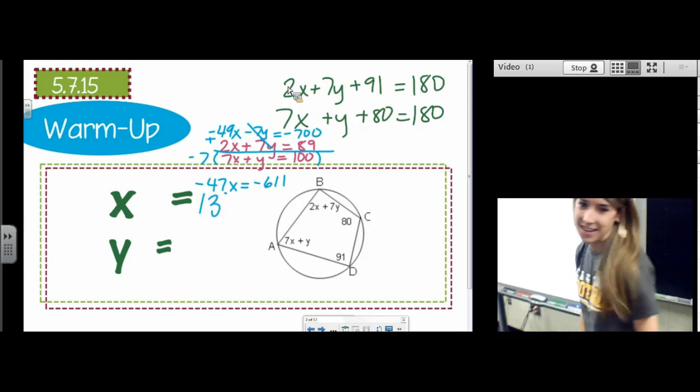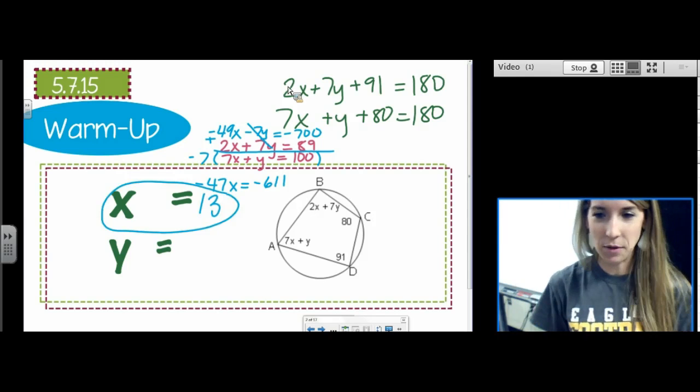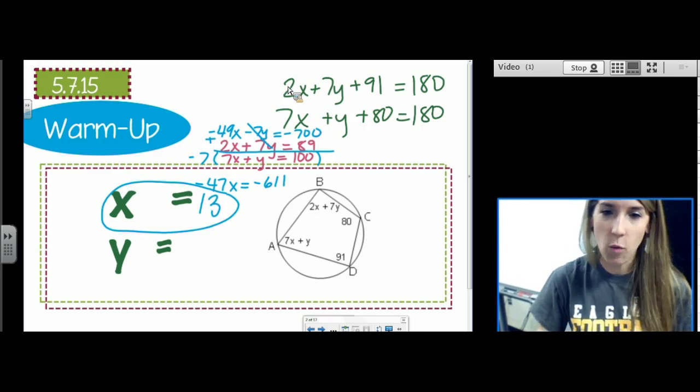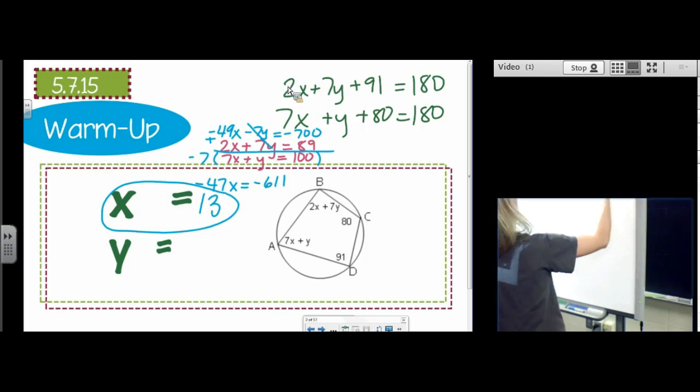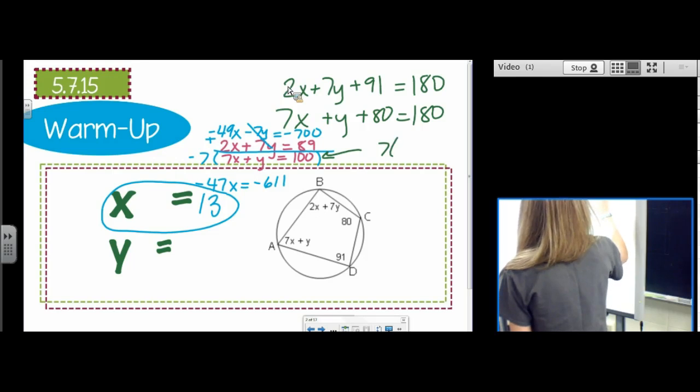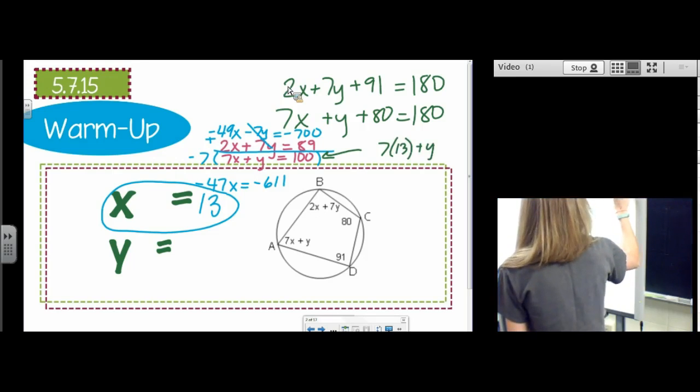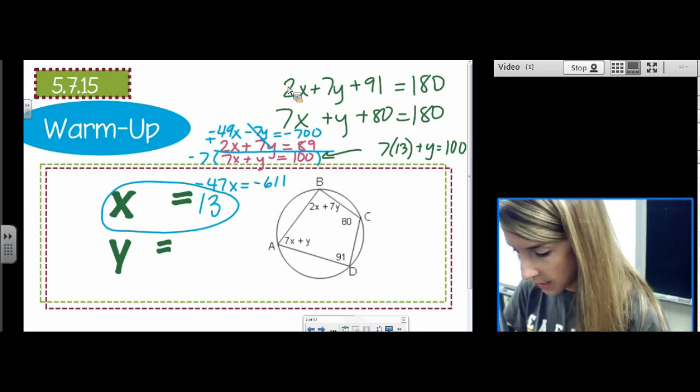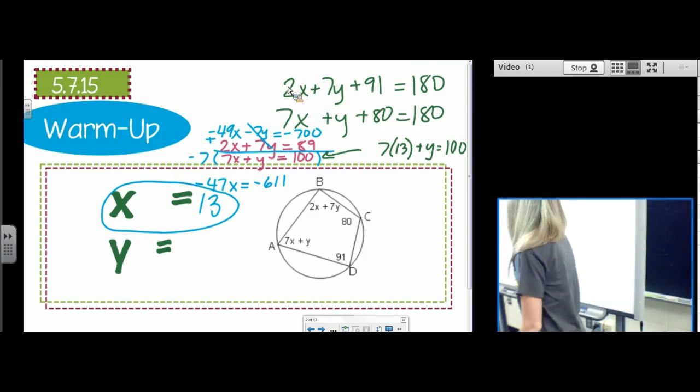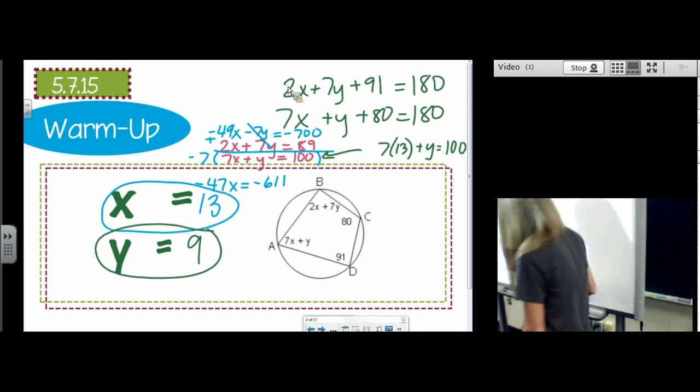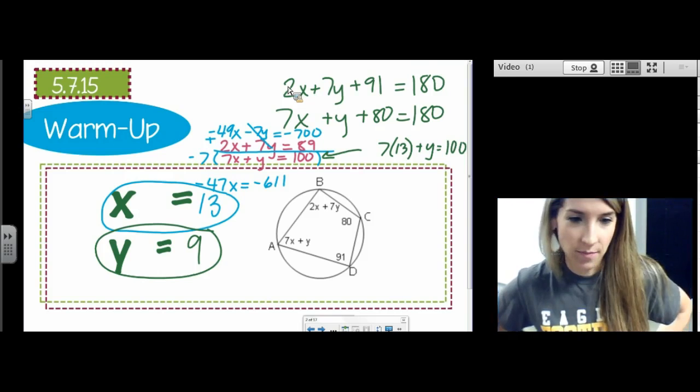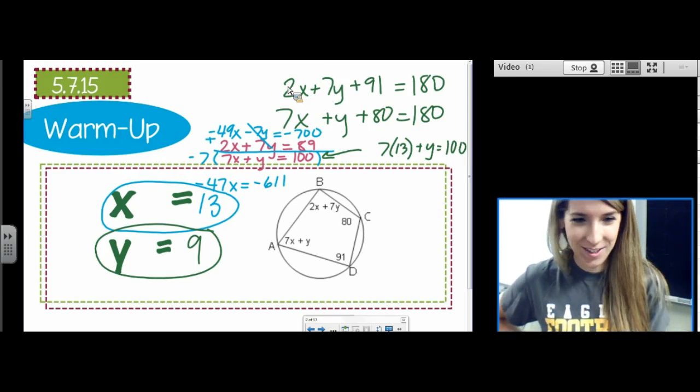So when you divide both sides by 47, you get x is 13. A beautiful integer. Maybe a little unlucky, but a beautiful integer. Once you have x, you've done all the hard work. You can just plug it back in to get y. I would plug it back in to this equation right here. 7 times 13 plus y equals 100. So then we just do 7 times 13, 91, and we do 100 minus 91 to get y equals 9. So when a quadrilateral is inscribed in a circle, opposite angles are supplementary. That's the moral of that story.